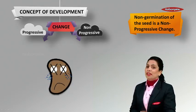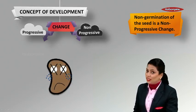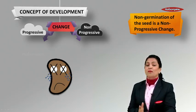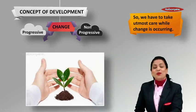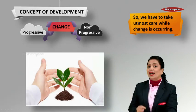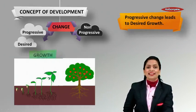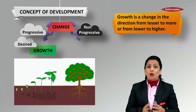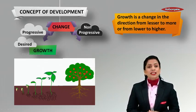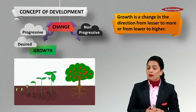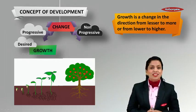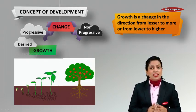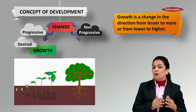The non-germination of a seed is a non-progressive change — a negative change. We have to take utmost care while change is occurring. Progressive change always leads to a desired growth. Growth is a change in the direction from lesser to more, or from lower to higher. Earlier the plant had less roots, stems, and leaves, but now the tree has more roots, more stems, and more leaves.